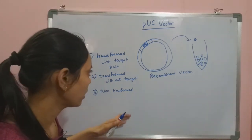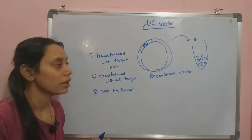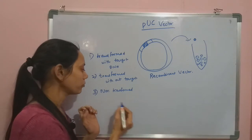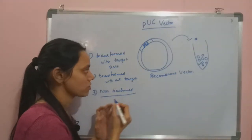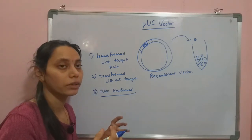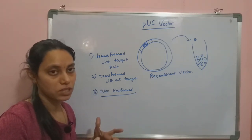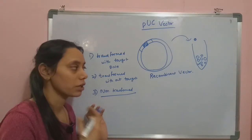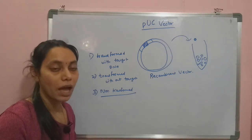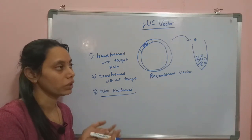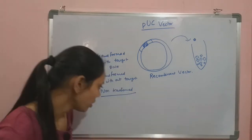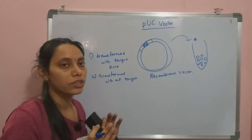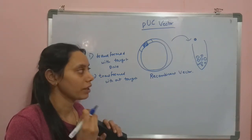Among these three categories — transformed cells with target DNA, transformed cells without target DNA, and cells that don't have the vector at all — we need to select the transformed cells that contain the target DNA insert. Non-transformed cells don't have the vector, meaning they lack the ampicillin resistance gene, so they cannot survive in ampicillin and are eliminated.